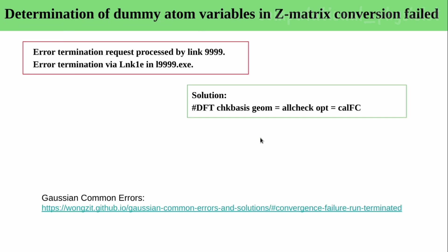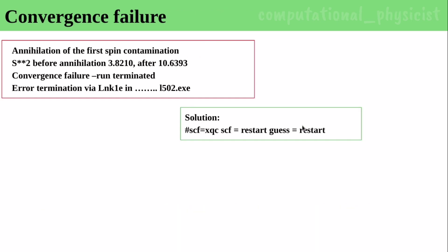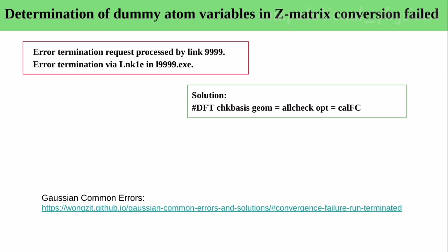Next is the 'Determination of dummy atom variables in Z-matrix conversion failed' error. Sometimes dummy atom variables in Z-matrix conversion also fail. For this, you can see the error message 'error termination request processed by l9999.' If you notice this l9999 executable in the error, the solution is to add: DFT check basis, geometry allcheck, opt, calcfc. This will calculate all wave functions and check all geometries so you can move forward.